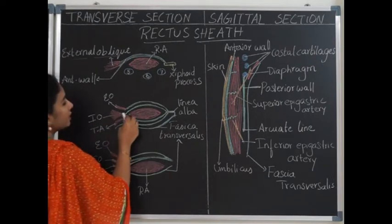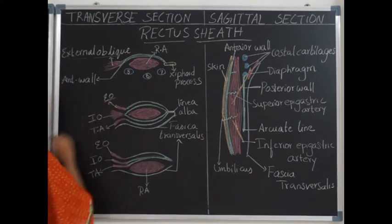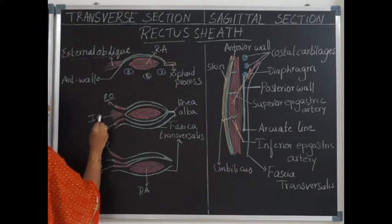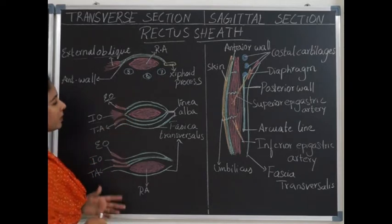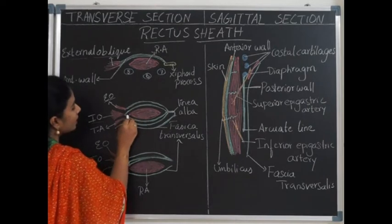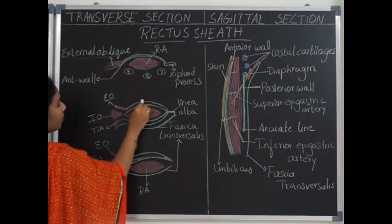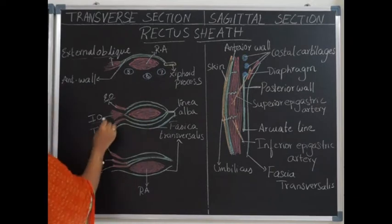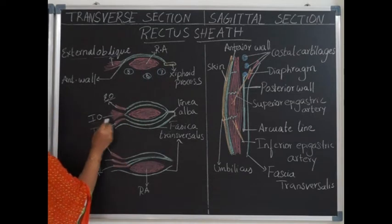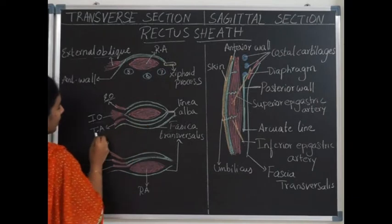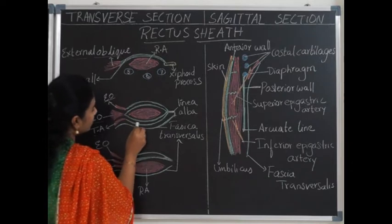In the middle section — below the costal margins and above the arcuate line — the anterior wall is formed by the external oblique aponeurosis and also a lamina from the aponeurosis of the internal oblique muscle. The internal oblique aponeurosis splits into two laminae: a superficial lamina and a deeper lamina. The superficial lamina runs along with the external oblique aponeurosis to form the anterior wall. The posterior wall in this region is formed by the deeper slip of the internal oblique and the aponeurosis of transversus abdominis.